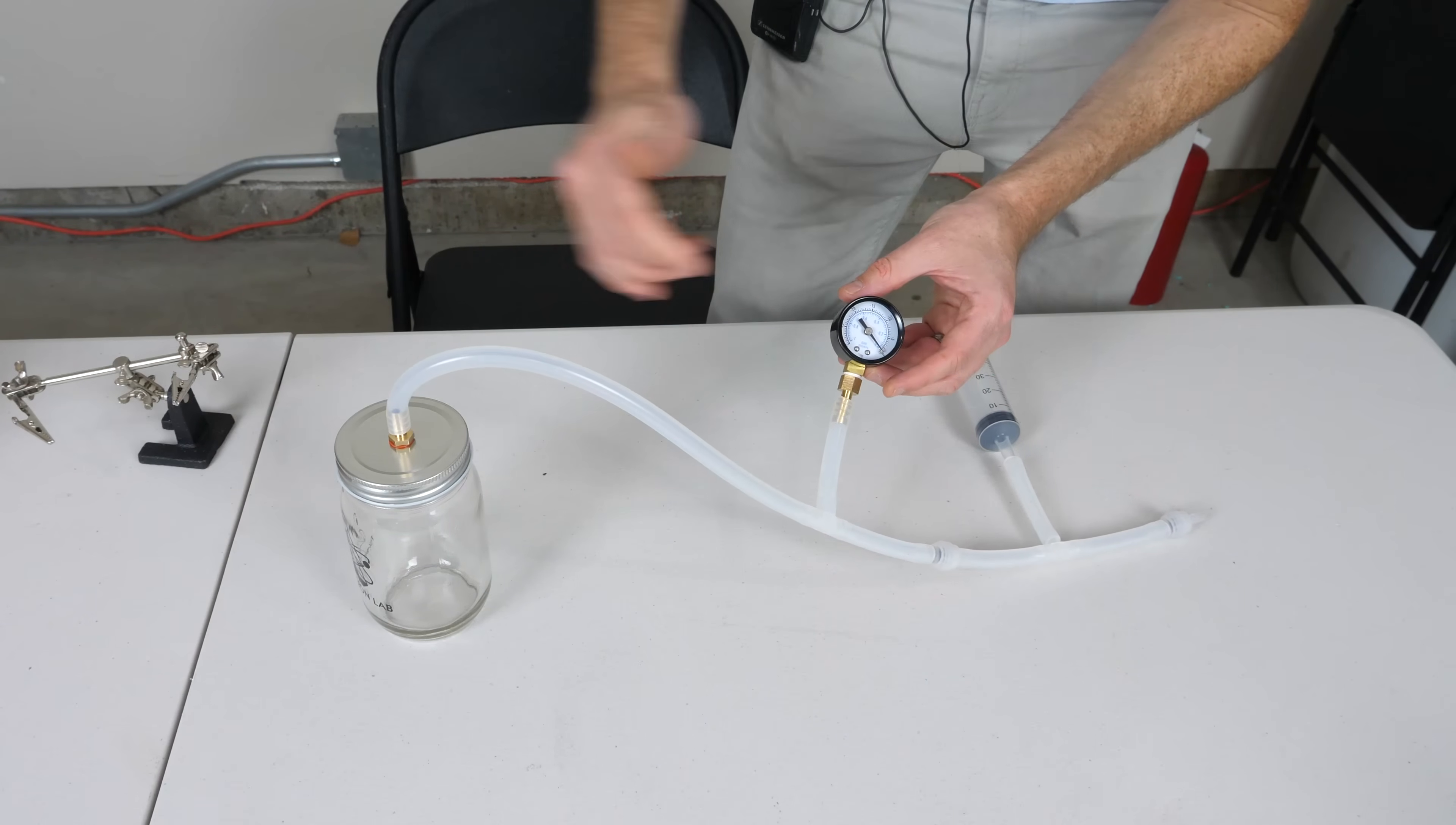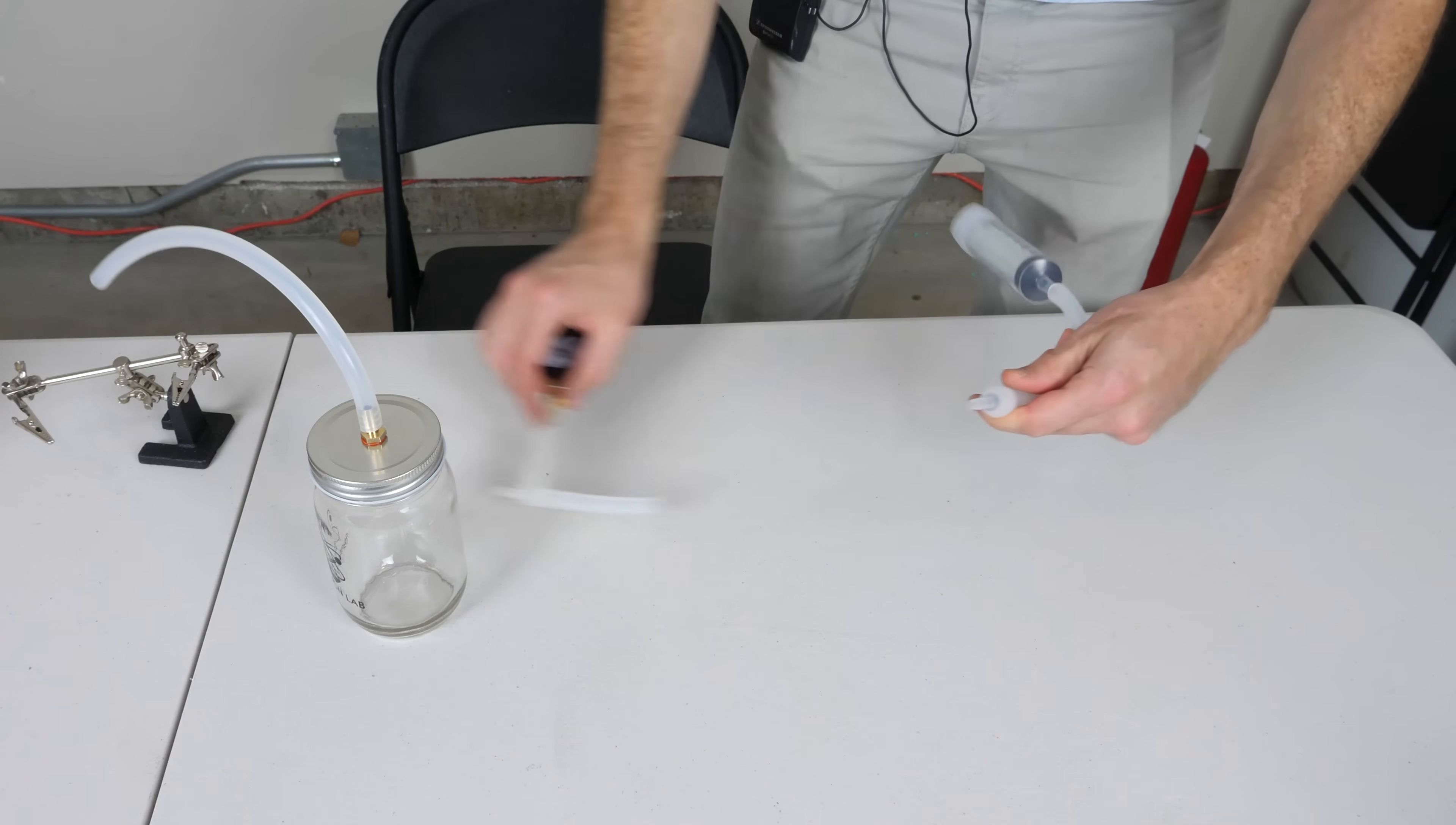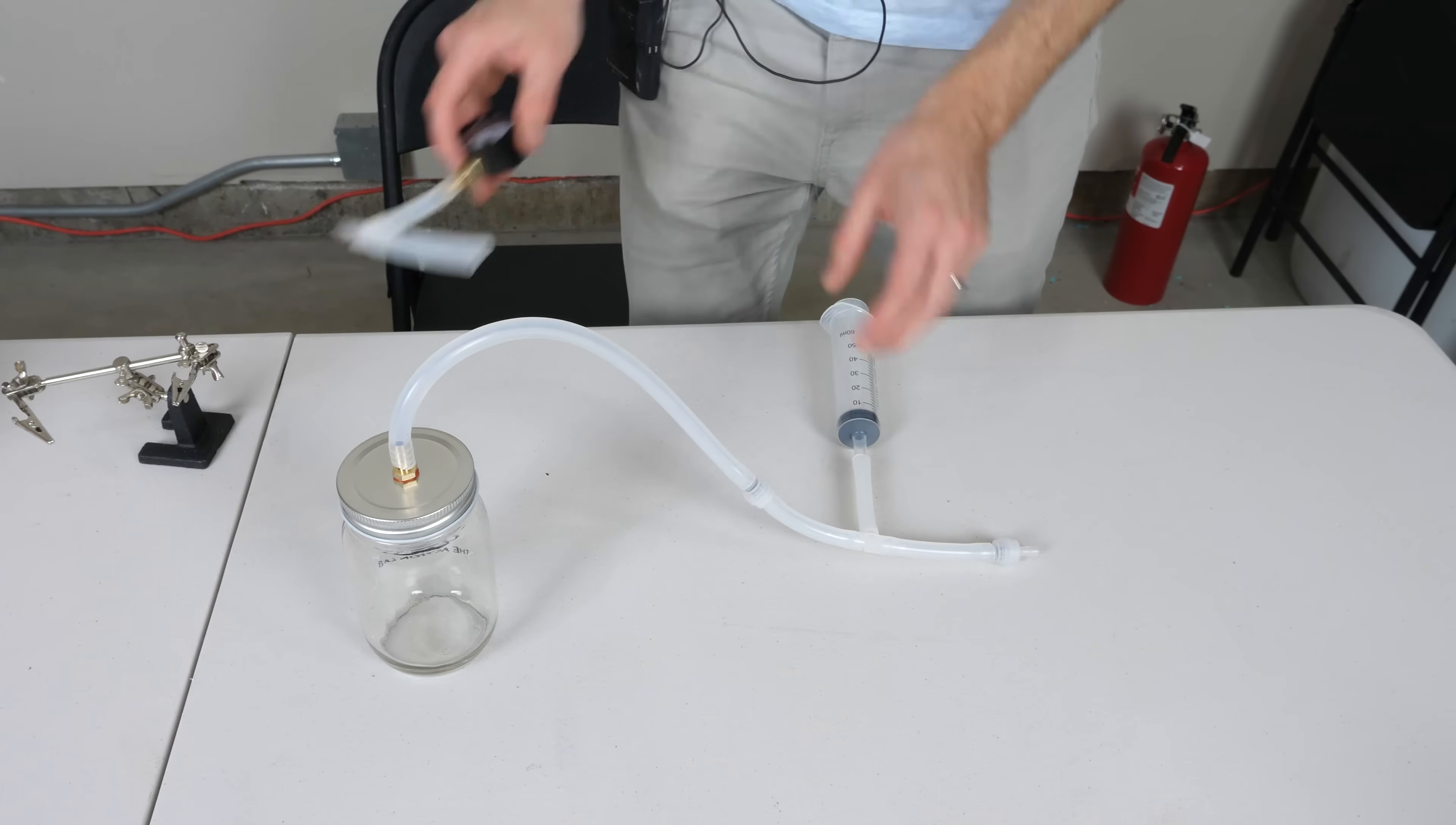And if during this whole setup your vacuum gauge isn't working correctly or you can't seem to get a good seal here, you can always just remove this whole connection here and just plug this on and still pull a vacuum in there just as strong as when you had this on. You just won't be able to tell what pressure it's at.